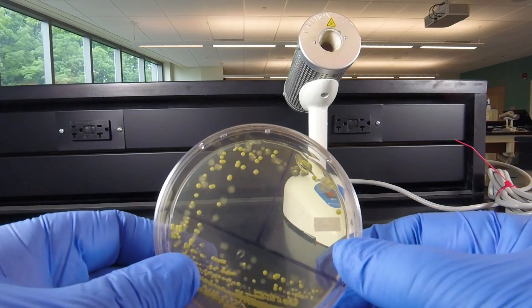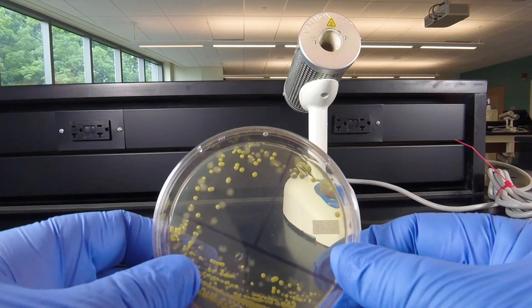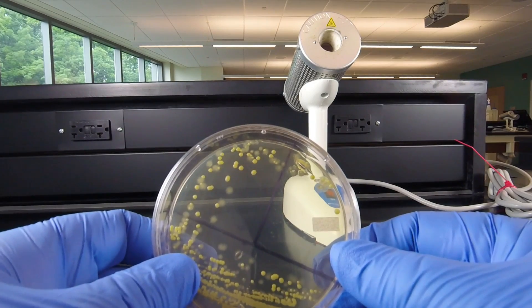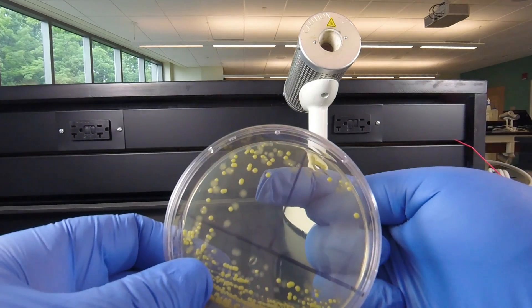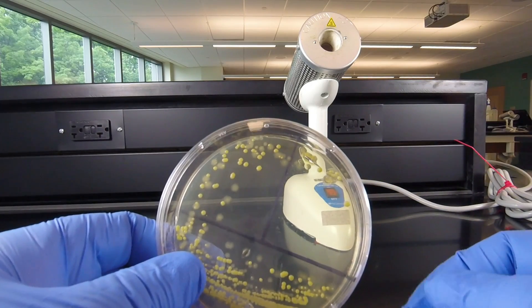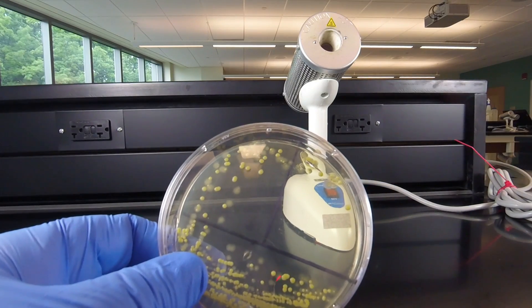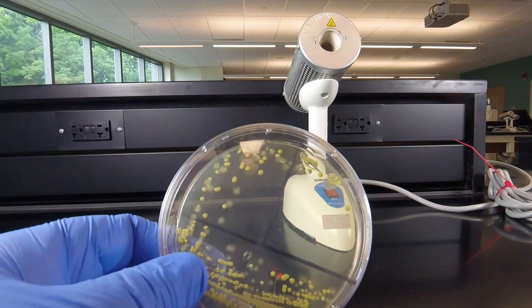We'll notice on the plate here that we have some single colonies of two different bacteria. In this case, the mixture of bacteria is Micrococcus luteus, producing the yellow water-insoluble pigment, and Escherichia coli, which produces no pigment. We have nice single colonies of both of those.